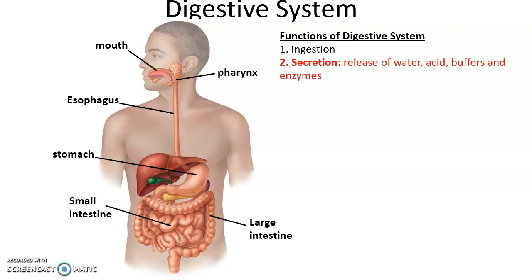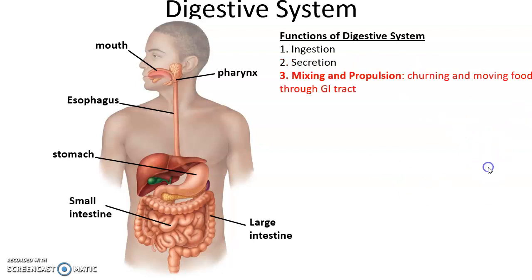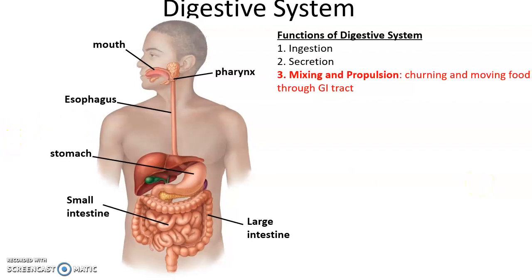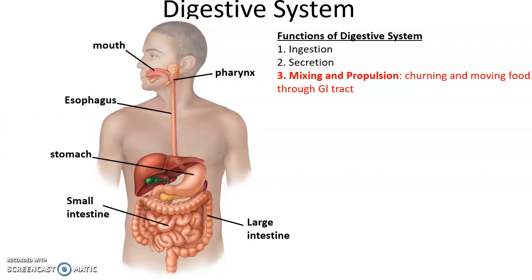Secretions also include pancreatic juices and lots and lots of enzymes. Mixing and propulsion: the food within the gastrointestinal tract is going to be churned and mixed and moved along the tube-like structure.